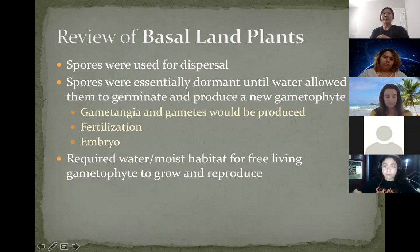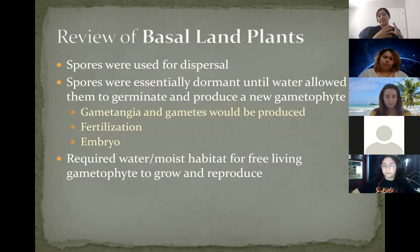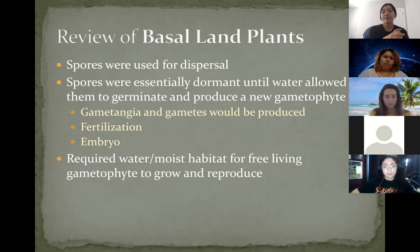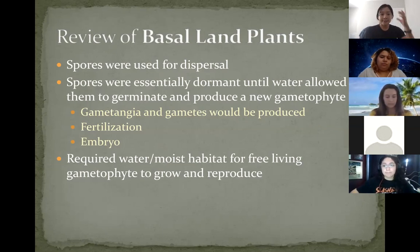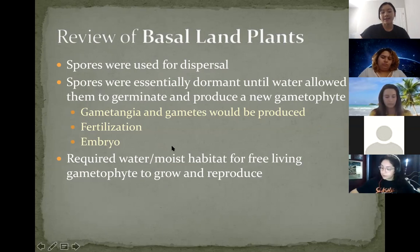In the case of mosses, those spores would be held in some kind of sporangium. For leptosporangiate ferns, those would be housed on the sori. For Selaginella or lycopods, the sporangia would be housed on the strobili. Once the spore lands in some kind of water when dispersed, it'll undergo mitosis and produce a brand new gametophyte. Spores required water and a moist habitat in order to produce a brand new free-living gametophyte.